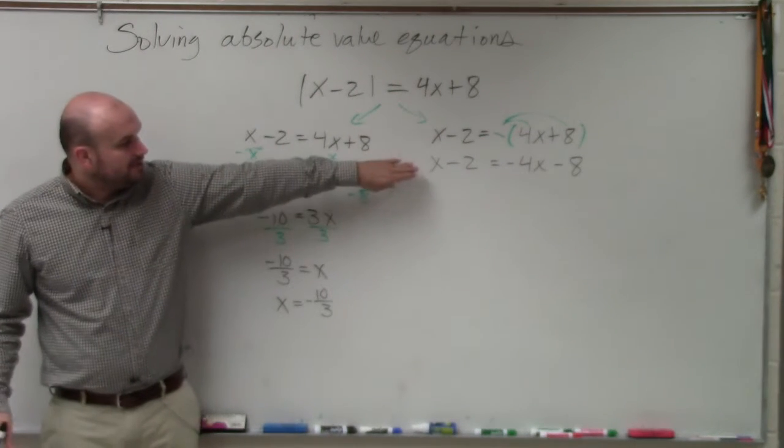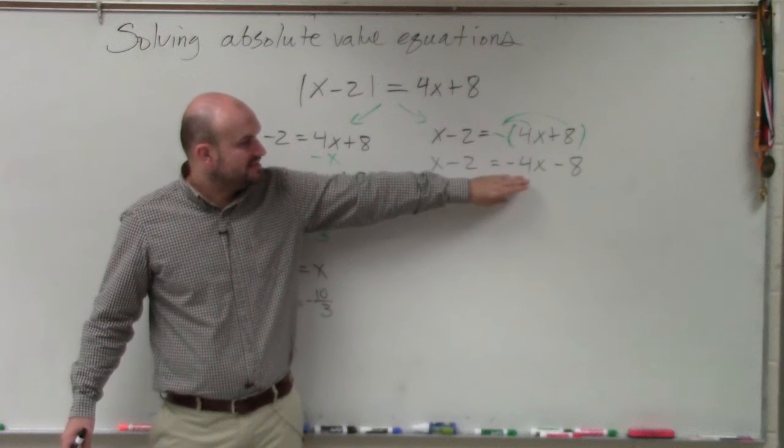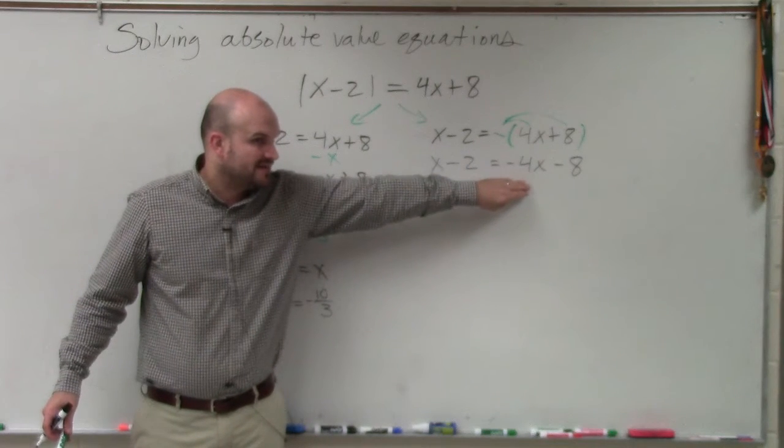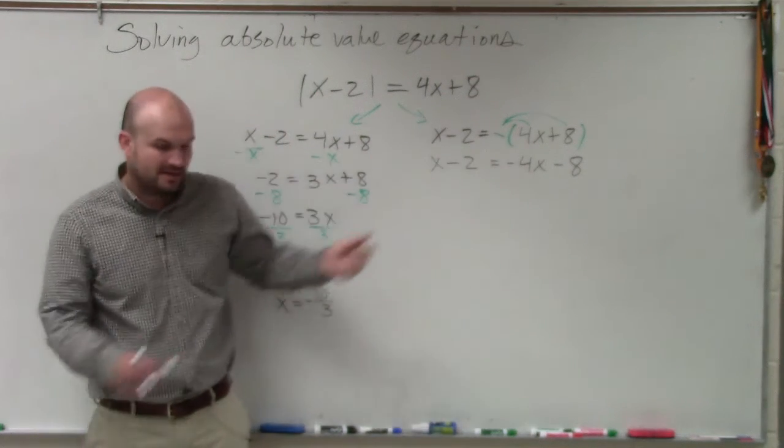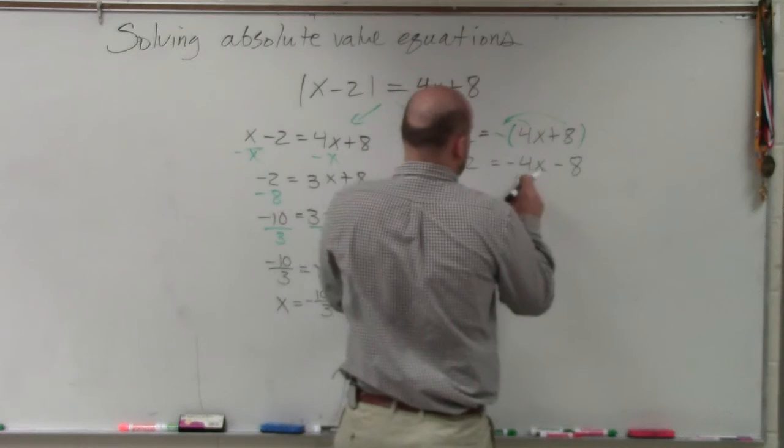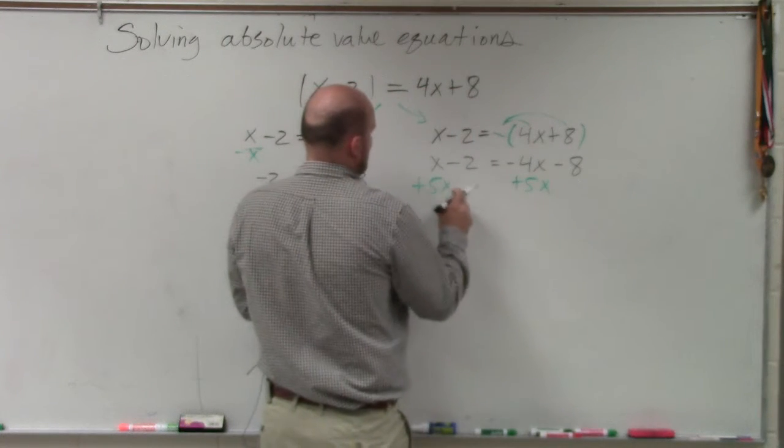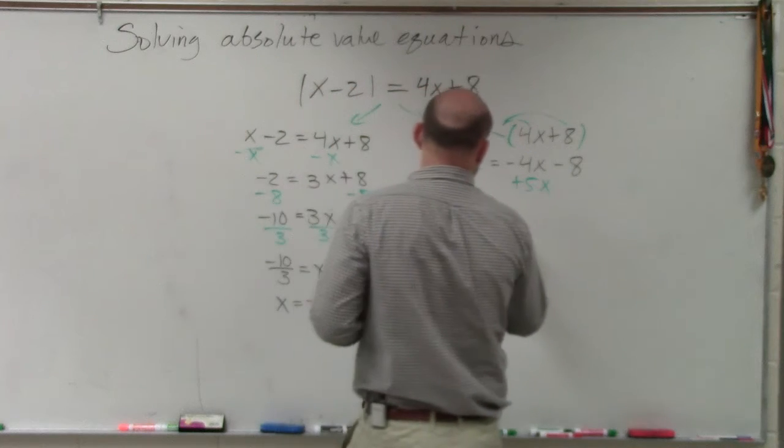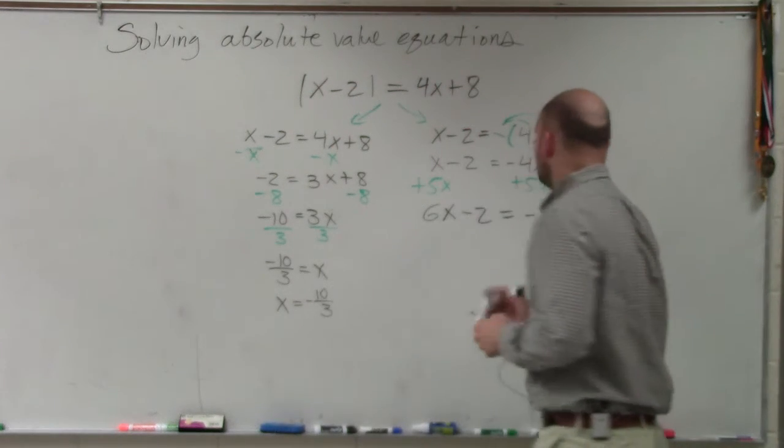In this example, I have a positive x and a negative x. So in this example, I'm going to want to get rid of the negative x. So I can solve for a positive. So I'm going to add a 5x over here. Doing that, I get 6x minus 2 equals negative 8.